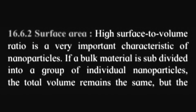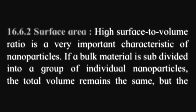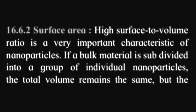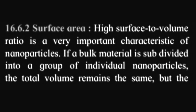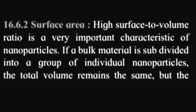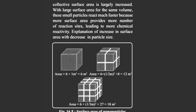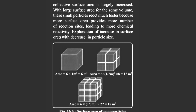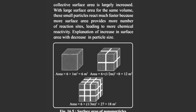The next characteristic is surface area. High surface area to volume ratio is a very important characteristic of nanoparticles — nanoparticles ki ek important characteristic hai surface to volume ratio. If a bulk material is subdivided into a group of individual nanoparticles, the total volume remains the same but the collective surface area is largely increased. Bulk material ko jab individual nanoparticles mein convert karo ga, tho uska total volume same hoga but surface area increase ho jayega. These small particles react much faster because more surface area provides more number of reaction sites.